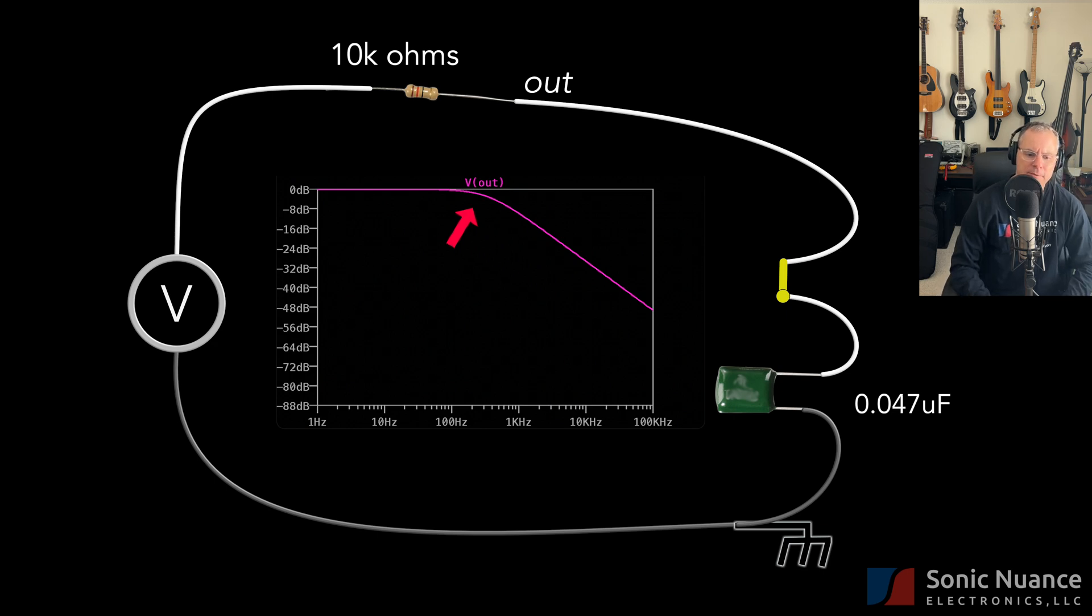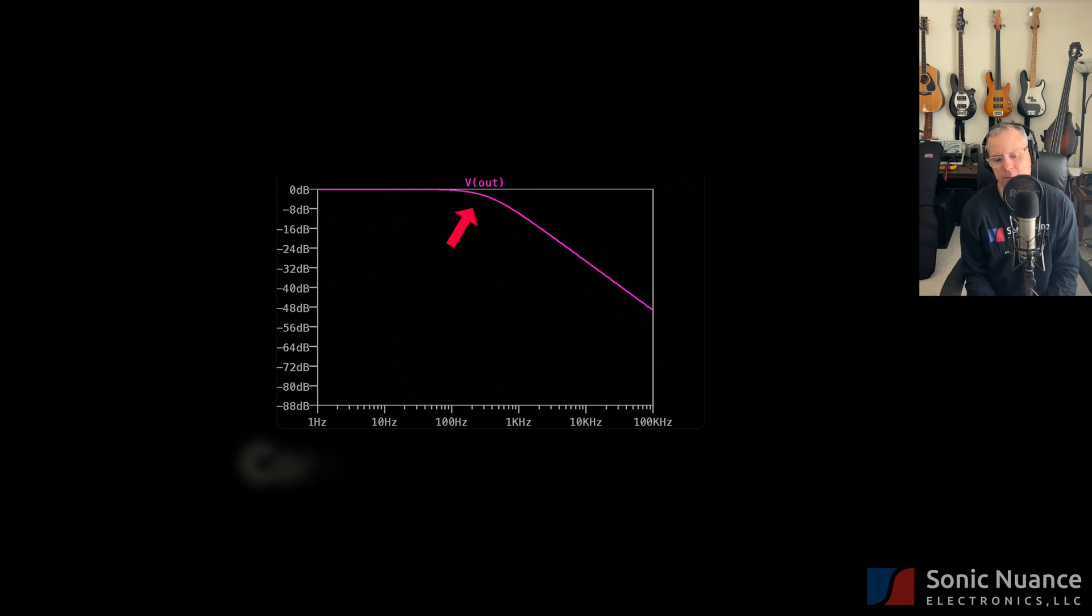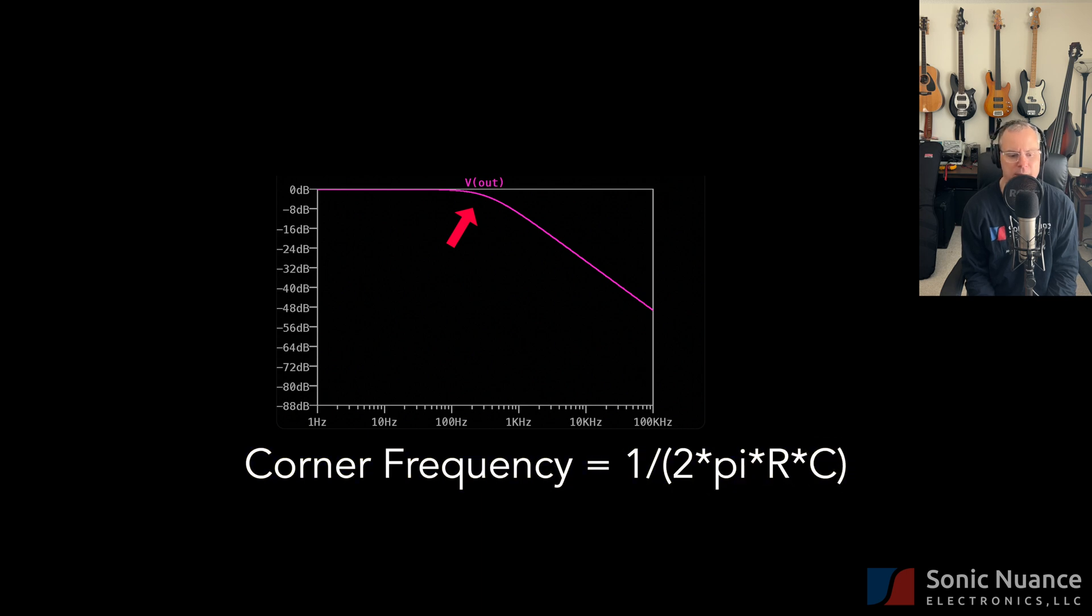The area around the inflection point here is known as the corner frequency. It's actually negative 3 dB down by definition, and is controlled by the resistance of the pickup and the reactance of the capacitance. The equation for the corner frequency in this circuit is defined as 1 over 2 pi times R times C.